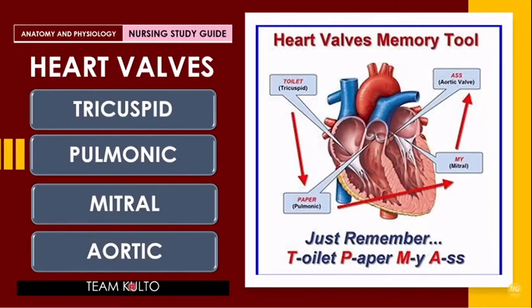Just remember this phrase: Toilet Paper My Ass. The first letter of each word has a meaning — T, P, M, and A. For Toilet, we have the tricuspid. For Paper, we have the pulmonic. For My, we have the mitral. And of course, for Ass, we have the aortic.